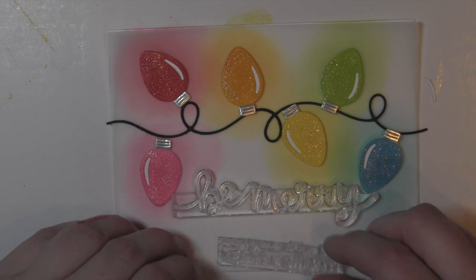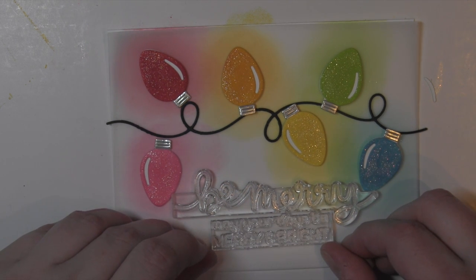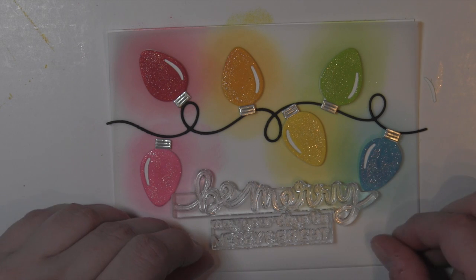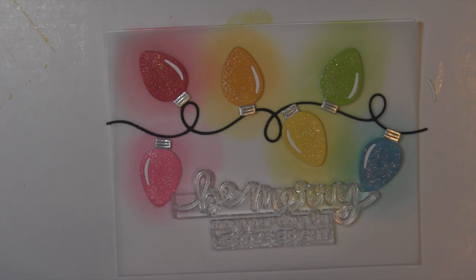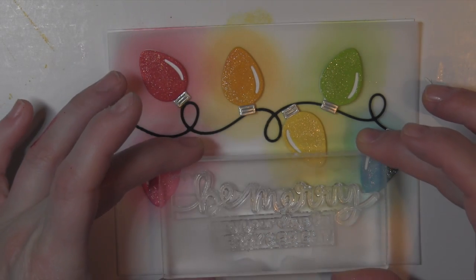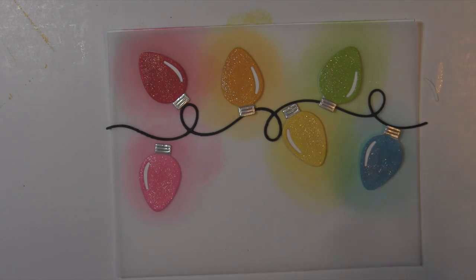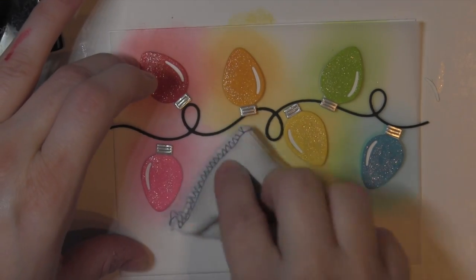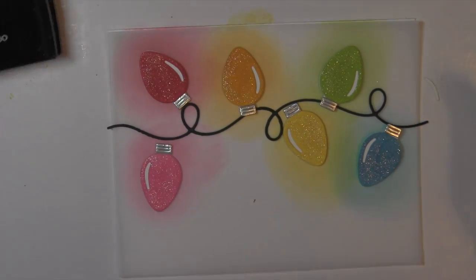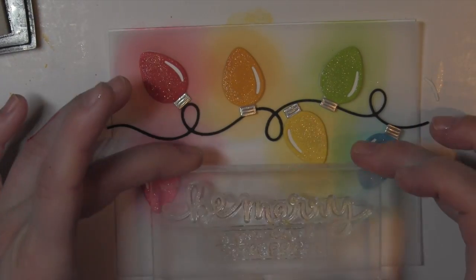Now before I attach anything, anytime I want to do embossing, I like to do that before I attach anything so any little extra embossing powder doesn't stick to adhesive or stick underneath die cuts or anything like that. So I've laid it out for placement purposes. I'm using a powder tool to kind of wipe where I'm going to stamp. That's going to help keep my embossing powder right on the stamped text instead of anywhere else.